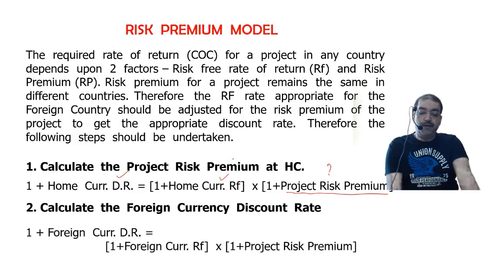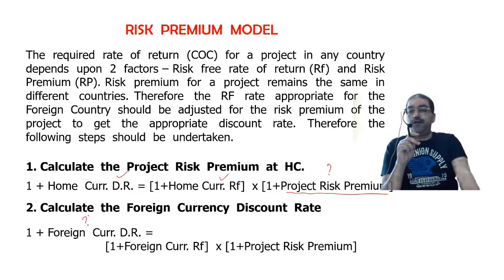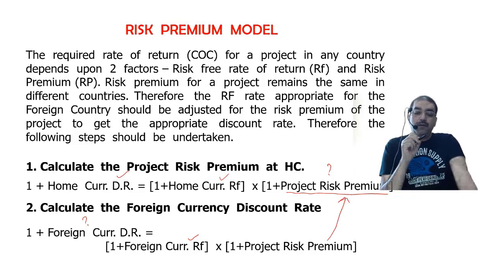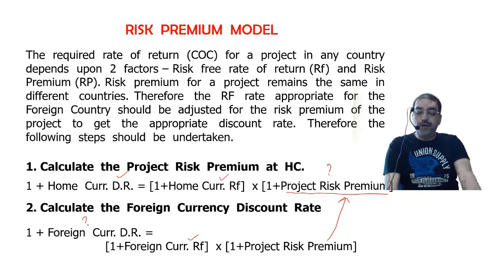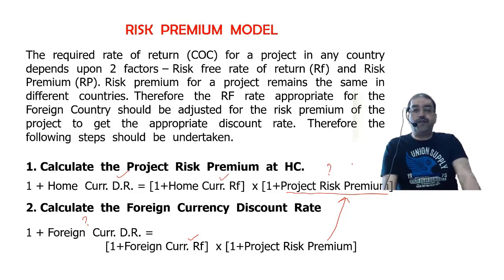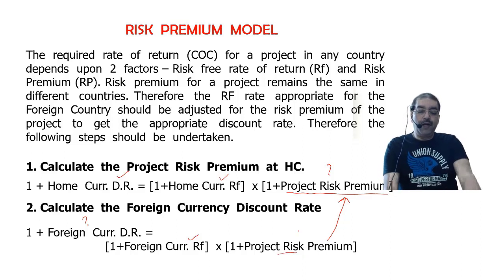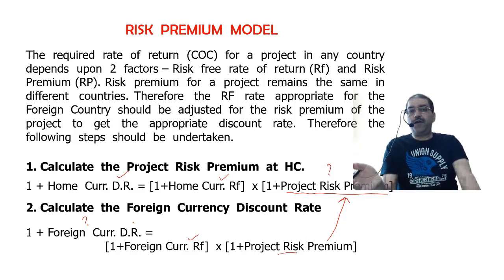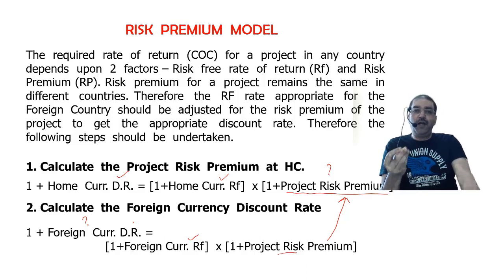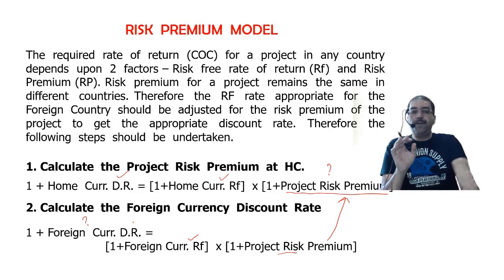After getting the foreign currency discounting rate, discount all foreign currency cash flows, calculate the present values, calculate NPV in foreign currency, convert into home currency at spot rate, and then evaluate. These are the two approaches. Now, since I have not taught capital budgeting, I will briefly revise how to solve NPV method problems.